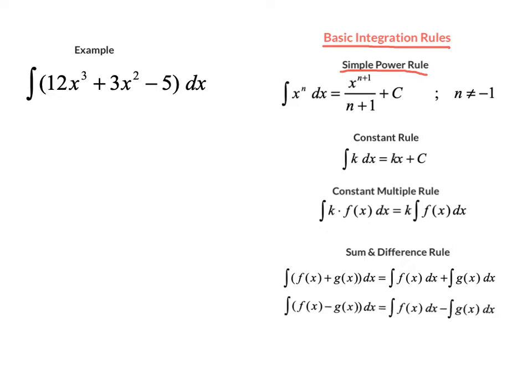And then we have this plus C quantity here, and that's called the arbitrary constant. When you run an antiderivative, you have to make sure that you include that, because there's a slight problem: the derivative of a constant is 0. So when we run a derivative backwards and do an antiderivative, we can't be sure what the constant term was to begin with. So to hold the place of it, we make sure we put this plus C — we usually call it C — and that's called the arbitrary constant.